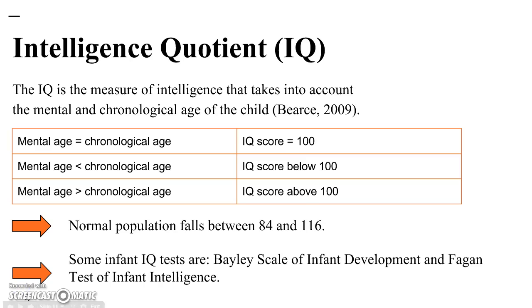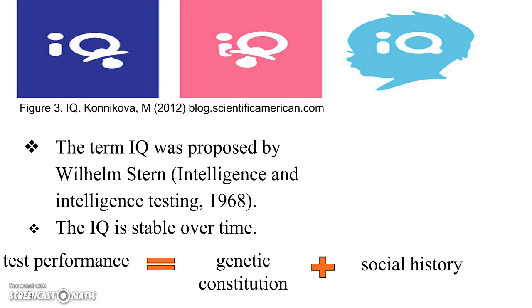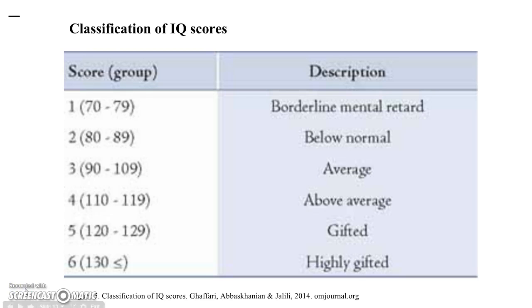The measure of intelligence that takes into account the child's mental and chronological age is called the Intelligence Quotient, or IQ. The term IQ was proposed by Wilhelm Stern. Mental age is the typical intelligence level found at a certain chronological age, while chronological age is the actual age of the child. IQ is stable over time and substantially the same at all age levels. Test performance results from the interaction of the individual's genetic constitution and social history.